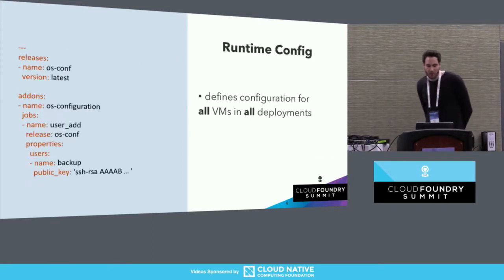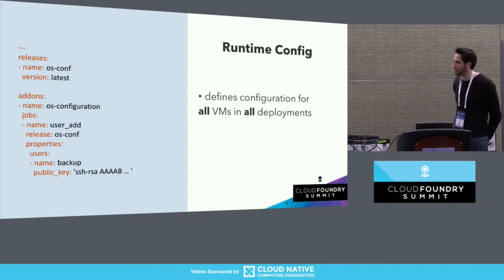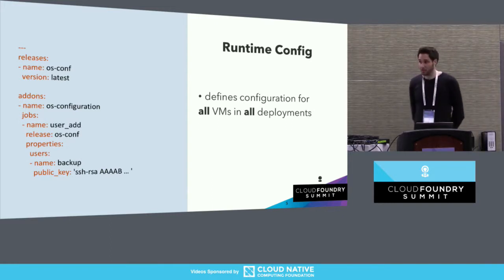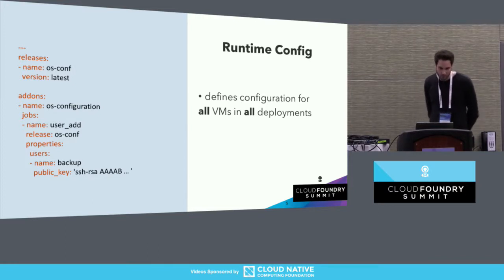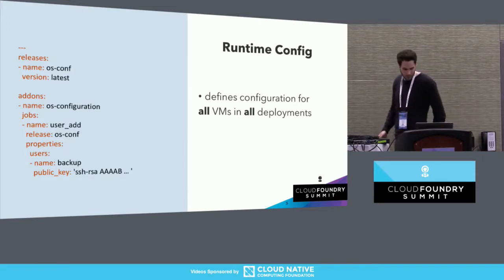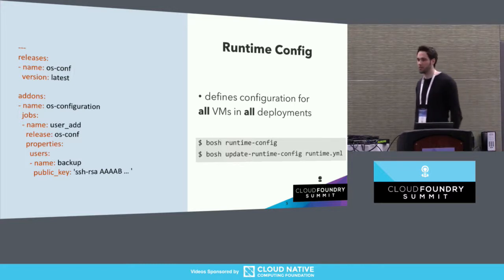The runtime config defines configuration that applies to all VMs in all deployments. This is useful for security agents, antiviruses, monitoring, or logging tools. The runtime config itself is infrastructure-agnostic. It knows the concept of an add-on — a release job that is co-located on all VMs managed by the director. In this example, there's a job called user-add, which adds a backup user and its public SSH key onto all VMs so the operator can SSH into those VMs. We have CLI commands 'runtime-config' and 'update-runtime-config' for downloading or uploading a runtime config.